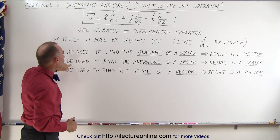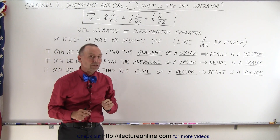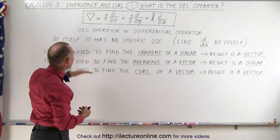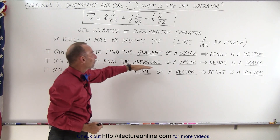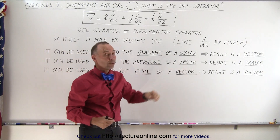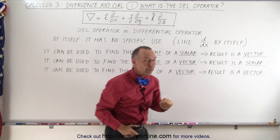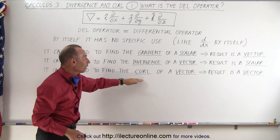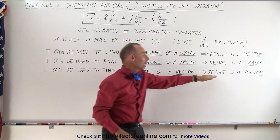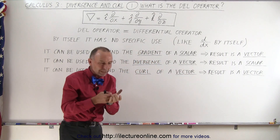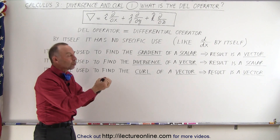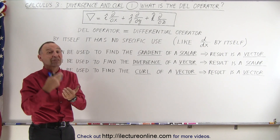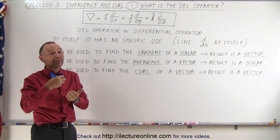We can also use the del operator to find the divergence of a vector quantity. So here we are in the main part of what we're trying to understand: divergence and curl. The del operator is used to find the divergence of a vector quantity, which gives you the result in a scalar format. And you can also use the del operator to find the curl of a vector quantity, which as a result will give you a vector quantity. So it's simply an operator — it does something to a scalar quantity and something to a vector quantity to give you specific information about them.